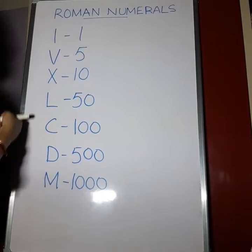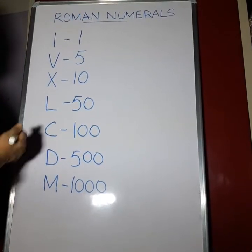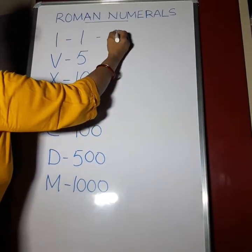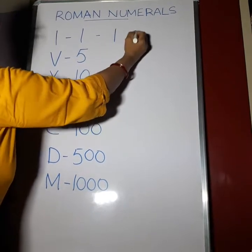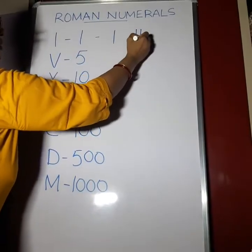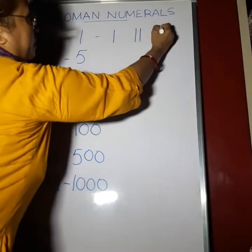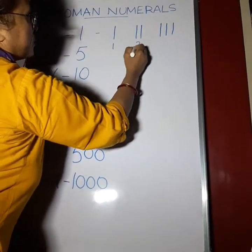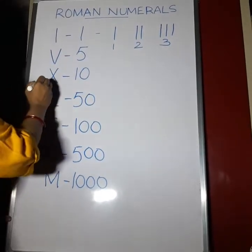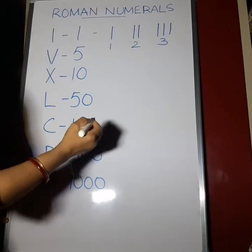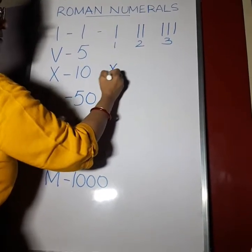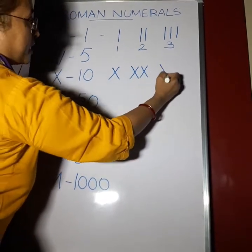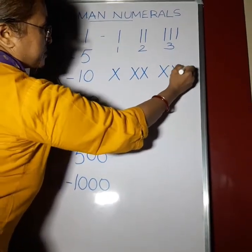Some numbers can be repeated. We can repeat I at most 3 times. So I is 1, II is 2, and III is 3. X can also be repeated at most 3 times. X is 10, XX is 20, and XXX is 30.